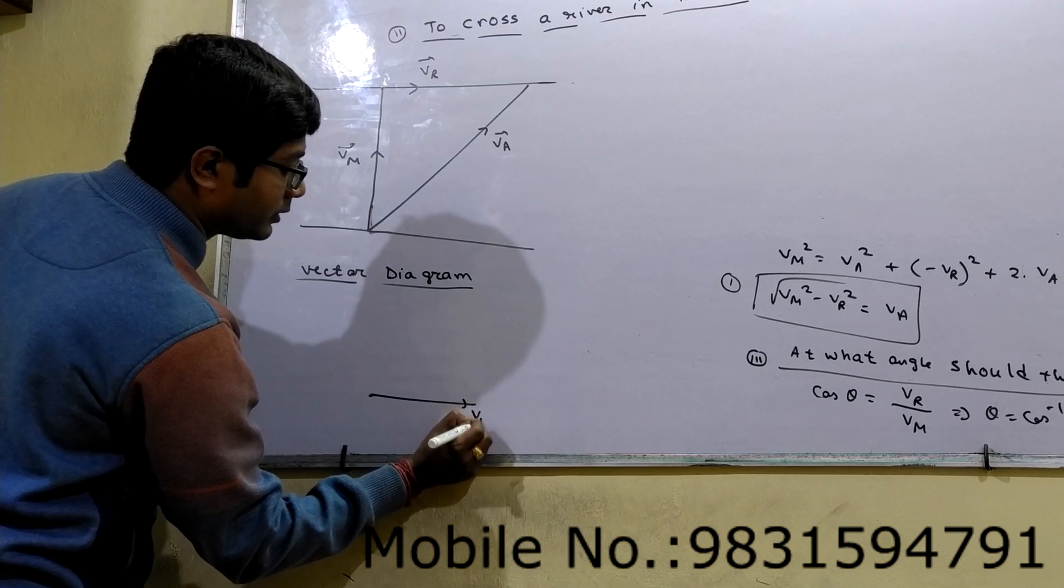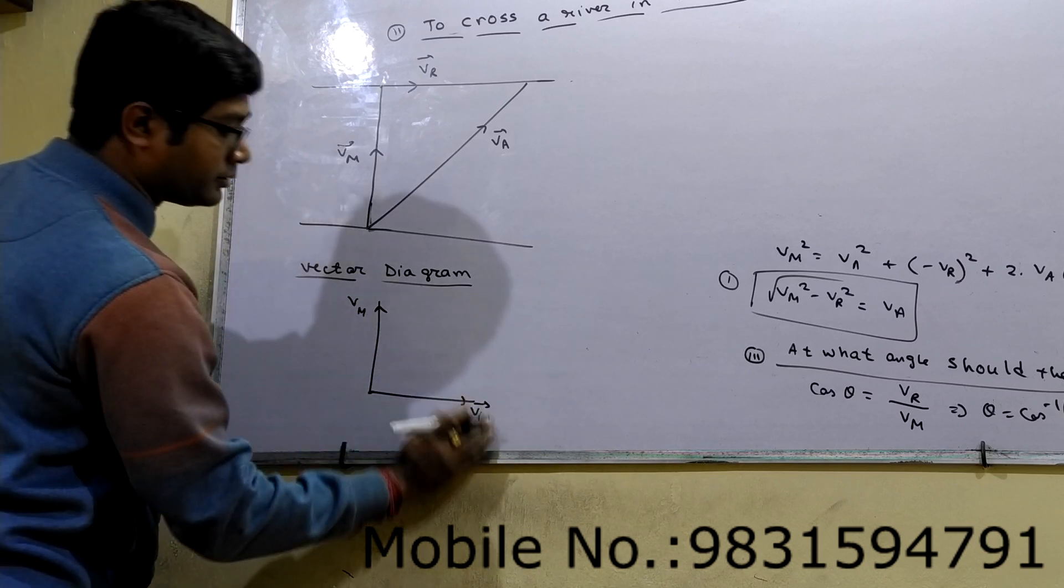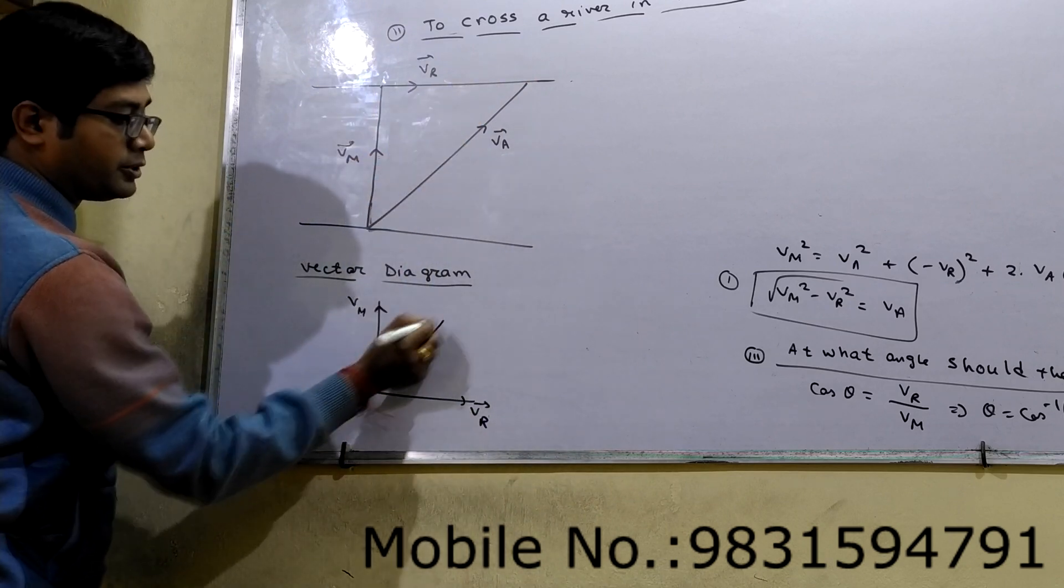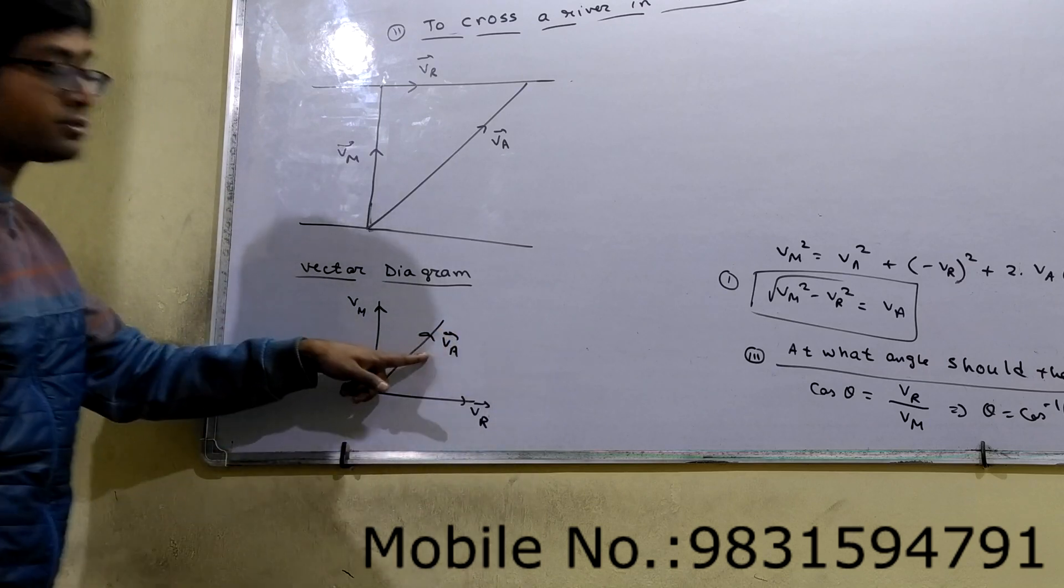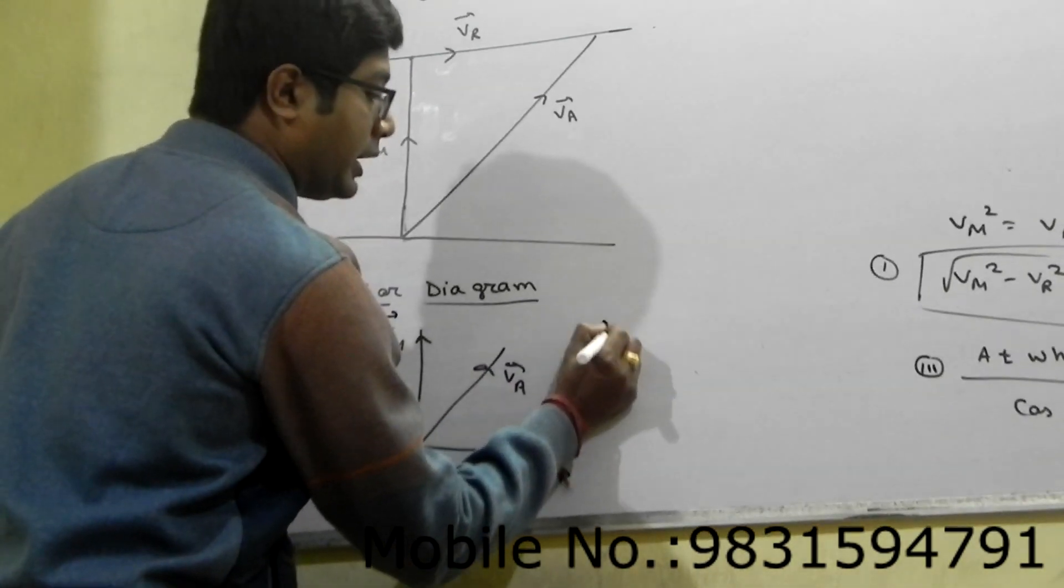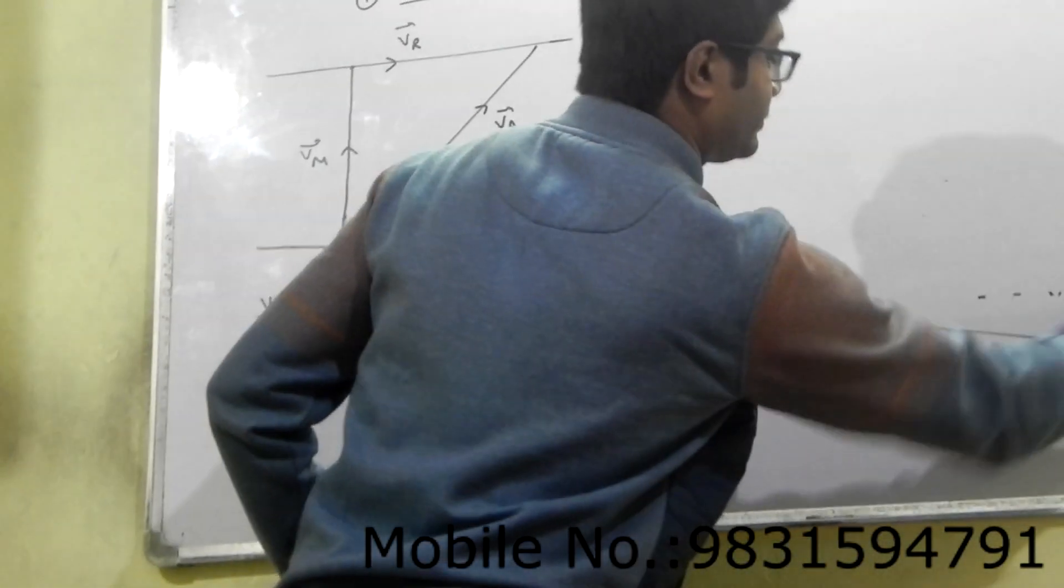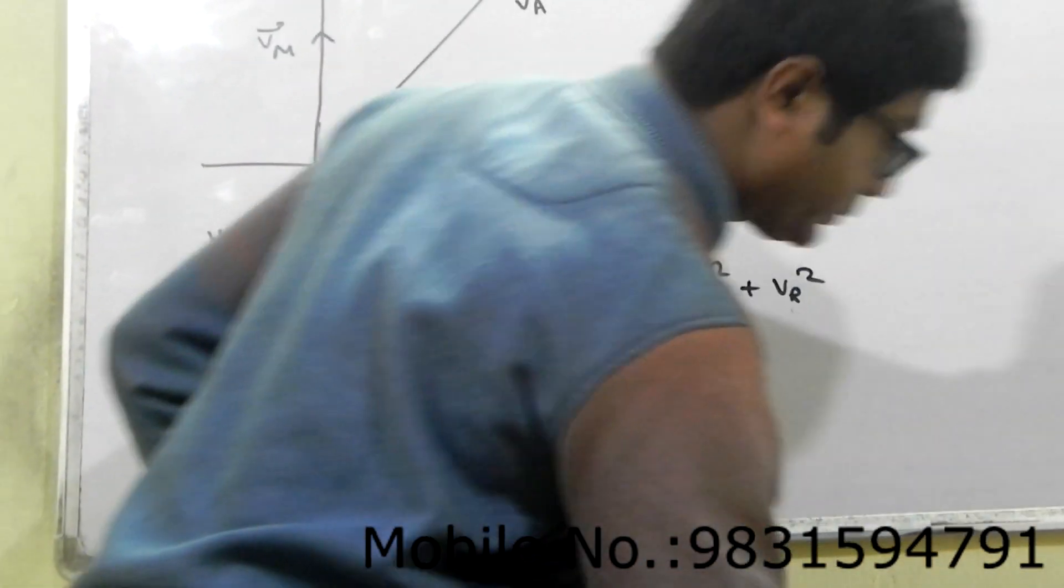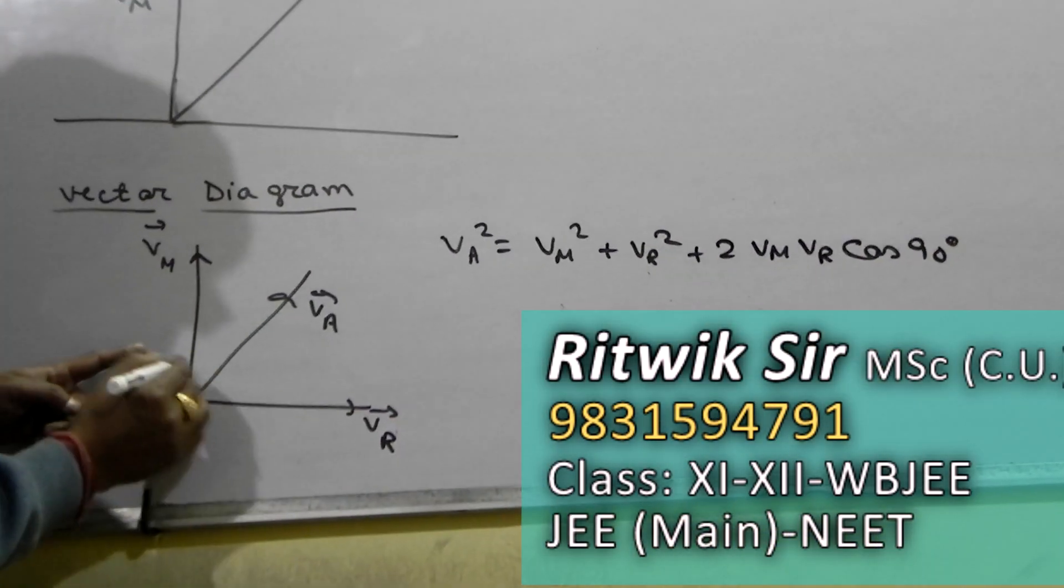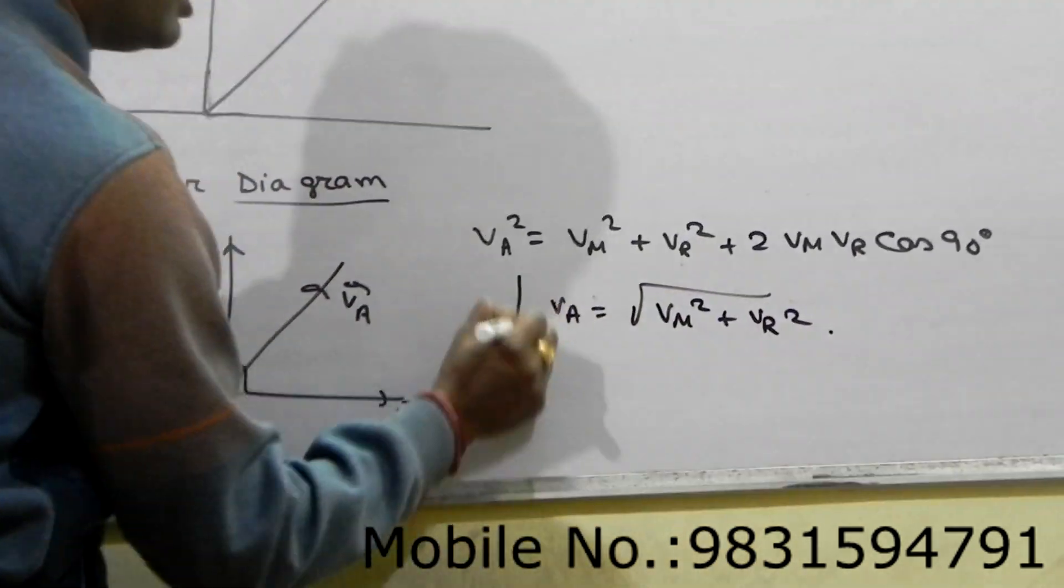So a point, this is VN, this is VR. Just from a point all the three vectors: VR, VN, and this is VA. Now which one is resultant? VA is resultant. Why? Because within the two vectors, these two are vectors and this is resultant. So VA square will be VN square plus VR square plus 2 into VN into VR into cos 90 degree. Angle between two vectors are 90.